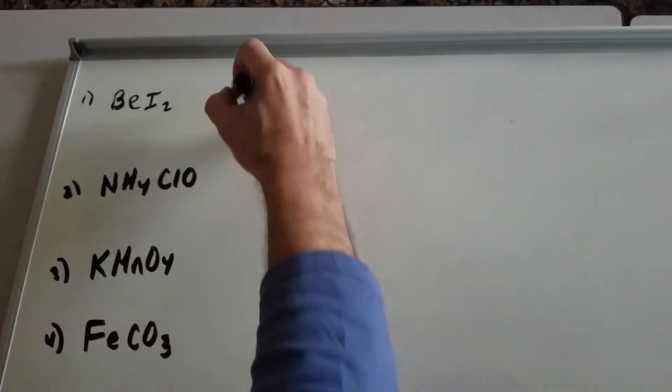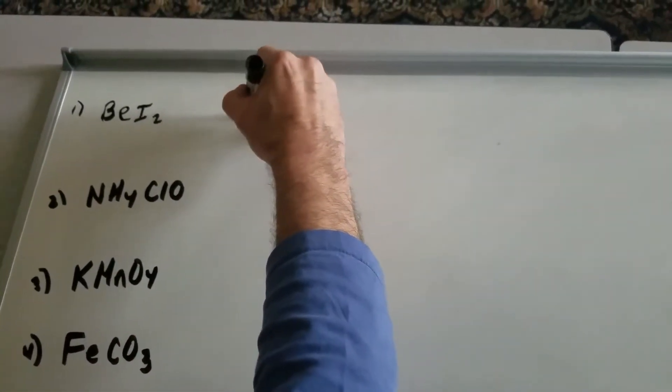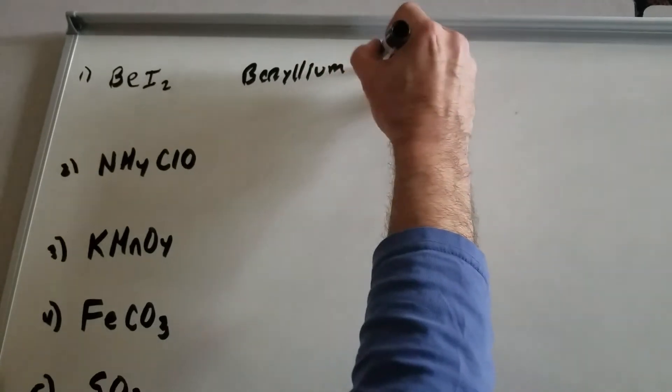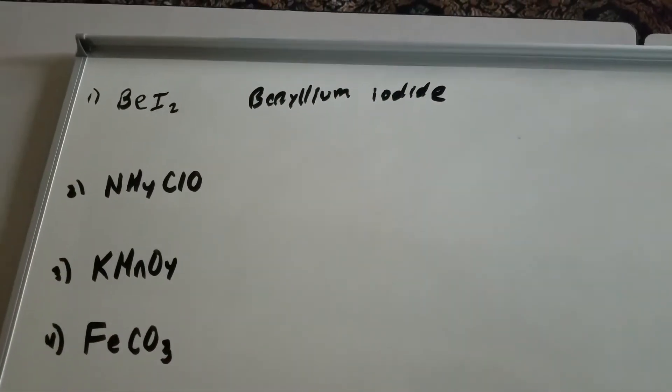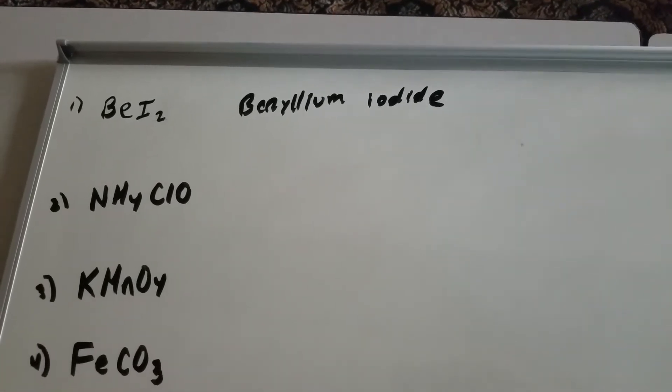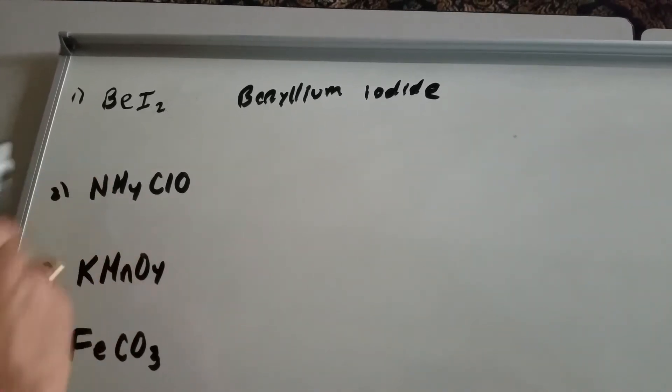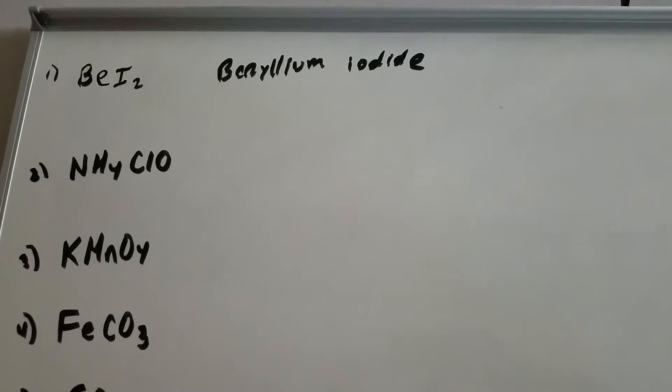Beryllium iodide is the name. So for this one, we have beryllium iodide. Boy, did you get all wrecked on that compound the other day. You thought it was ionic. Even though there's a metal here, be careful. Beryllium is an exception to the rule.